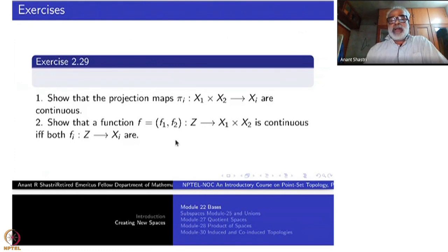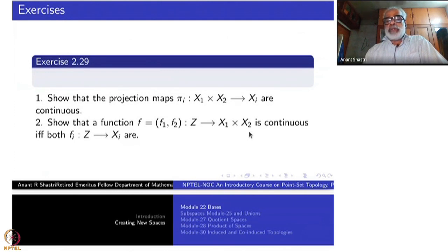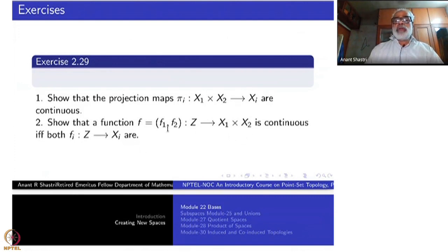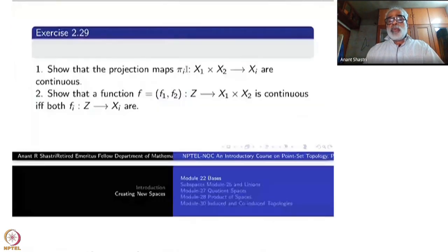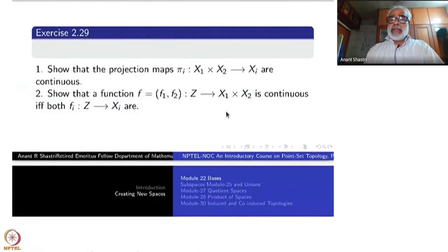The next exercise: take any space Z and a function into the product. A function is completely determined by its coordinate projections. Any map f from Z to X1 cross X2 is given by f1(x) comma f2(x). Both of them must be continuous if and only if the function f is continuous. To verify continuity, take a base and check that the inverse image of each base element is open.